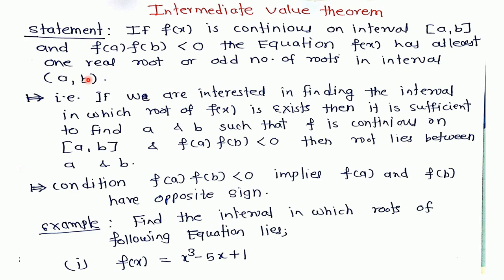Do not get confused about why we are using the closed interval here and the open interval there, because if f(x) has a root at point a or b, then f(a) × f(b) automatically gets 0.